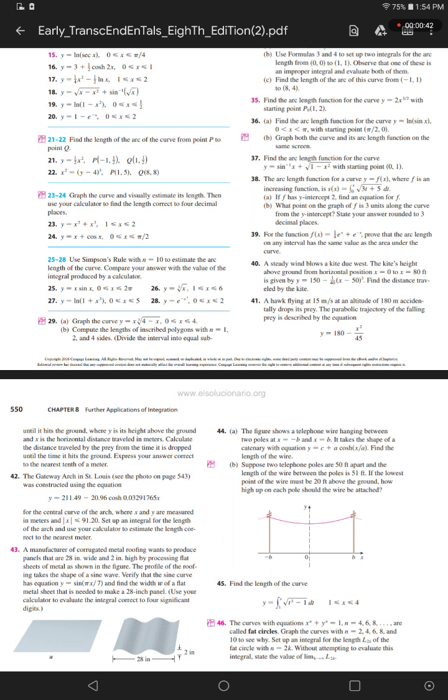Number 35, starting point (pi over 2, 0). Part B: graph both the curve and its arc length function on the same screen.